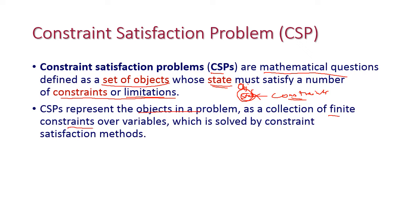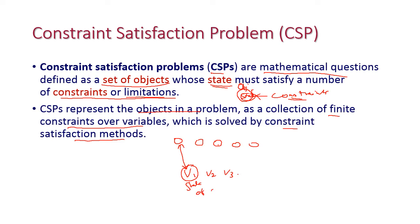CSP represents the objects in a problem as a collection of finite constraints over variables, which are solved by the constraint satisfaction method. In our domain we have many objects and variables V1, V2, V3, etc. We need to assign these variables to the objects — that is, the variable is nothing but the state of the object — and we do this by satisfying a fixed set of constraints, for example C1, C2, C3.